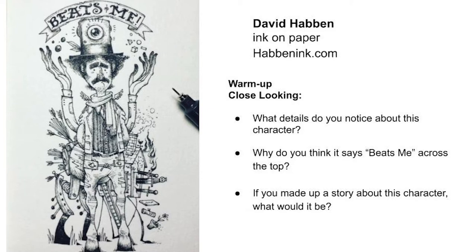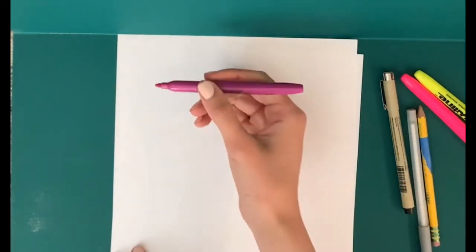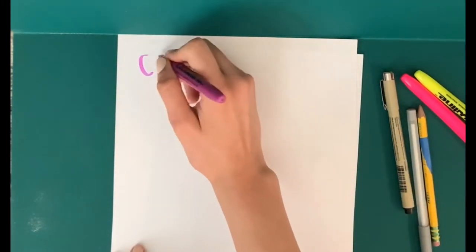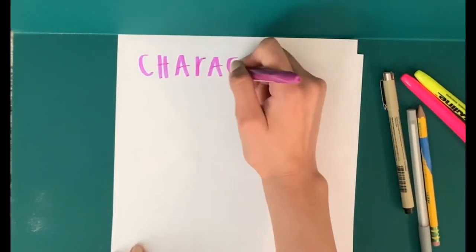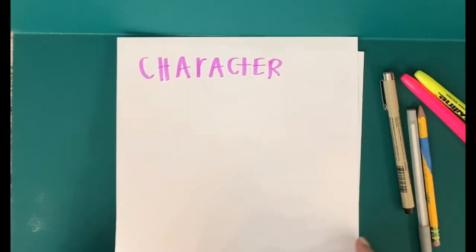Now that we've looked at both of these images, let's go ahead and get started on creating our exquisite corpse art project. I have a partner here to help me. You can do this with as many people as you want. We each have two pieces of paper as well as a pencil. We will be working on two sheets of paper: a description page and a character page.